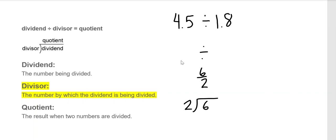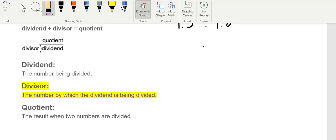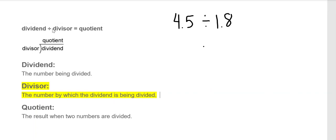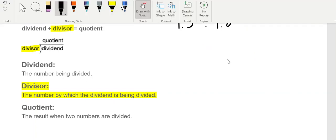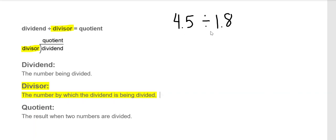Order matters in division. In my example, six is the dividend and two is the divisor. I emphasize that because the rule is that the divisor must be a whole number when you're dividing. And if it's not — like in this example with 4.5 divided by 1.8 — what's the divisor there? The divisor is 1.8.